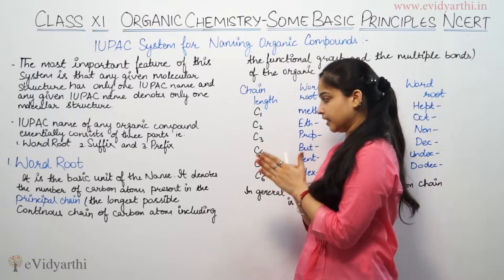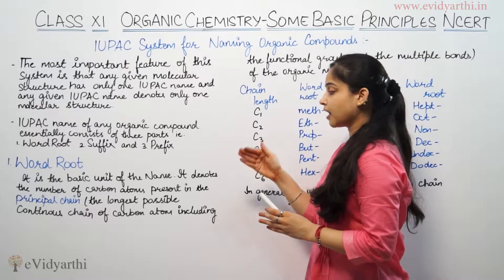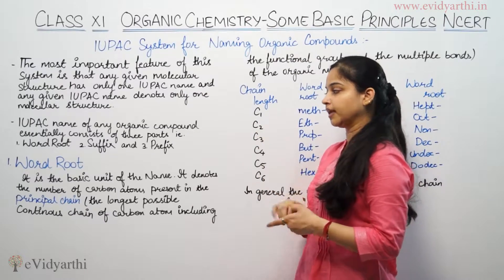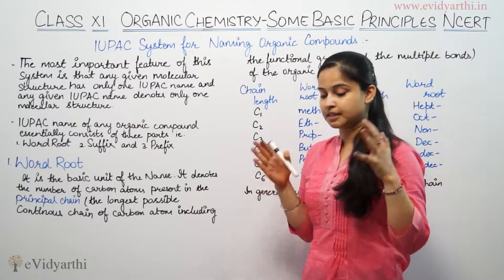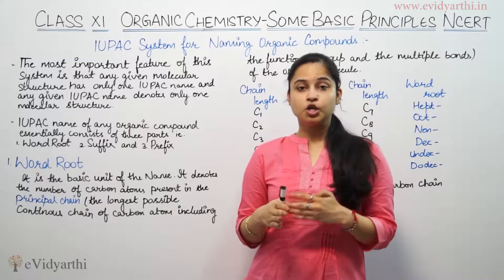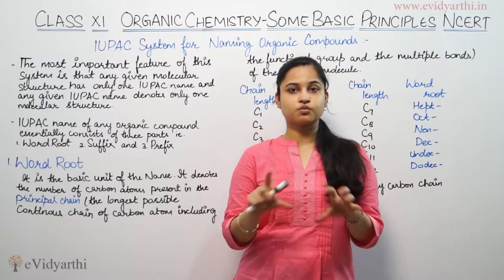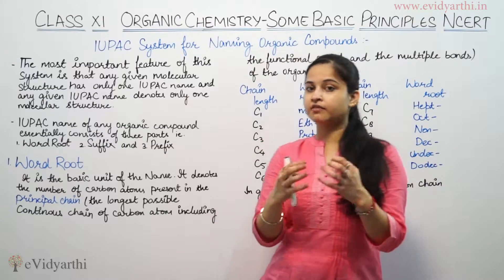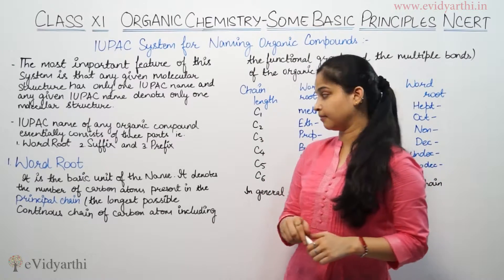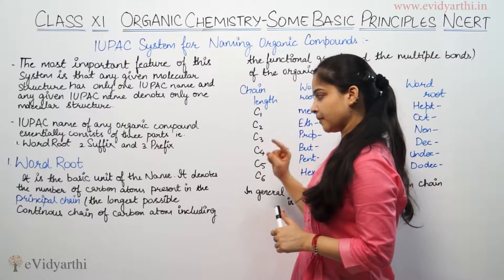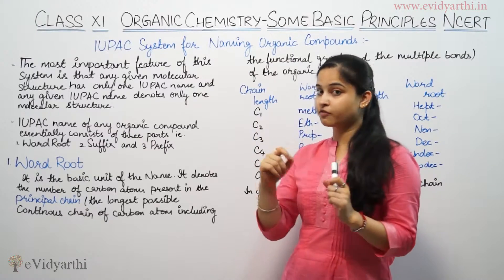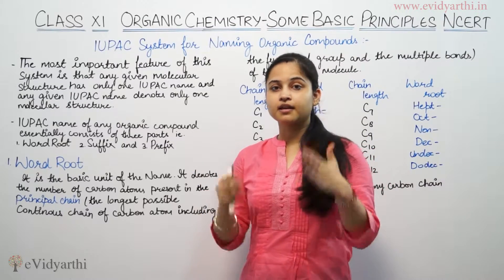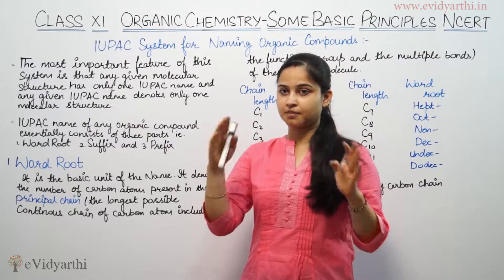Word root is the basic unit of the name. It denotes the number of carbon atoms present in the principal chain. Word root denotes the number of carbon atoms present in the principal chain.